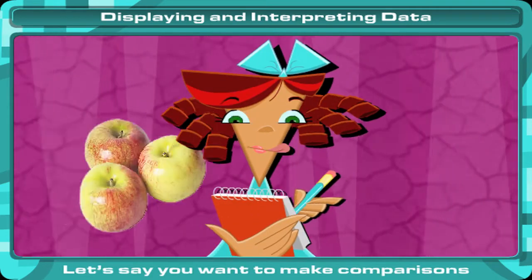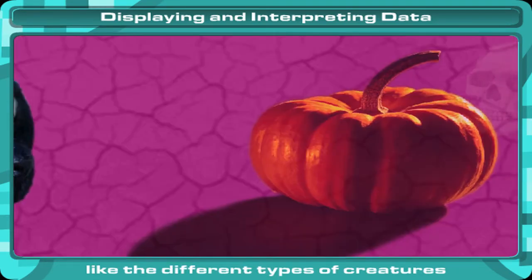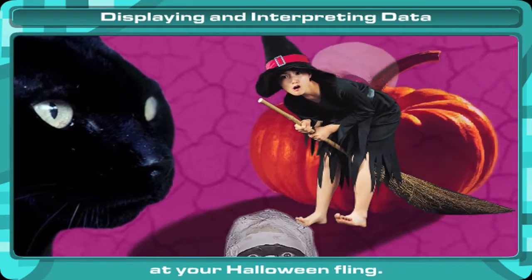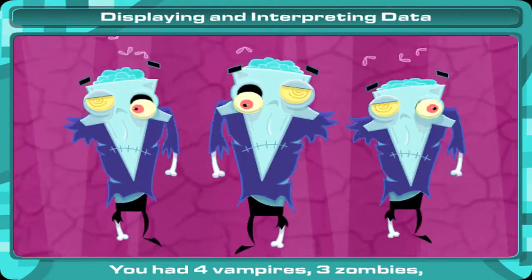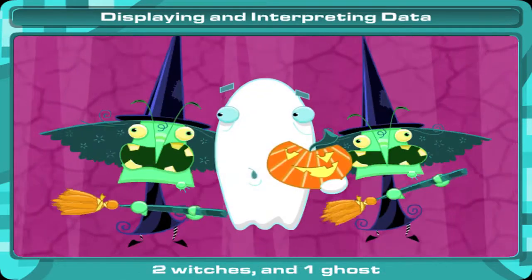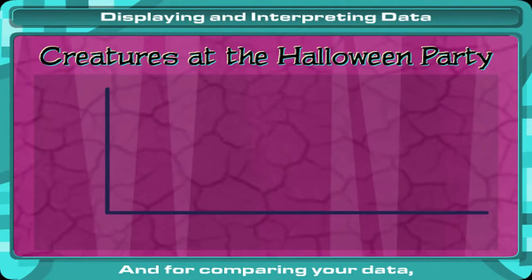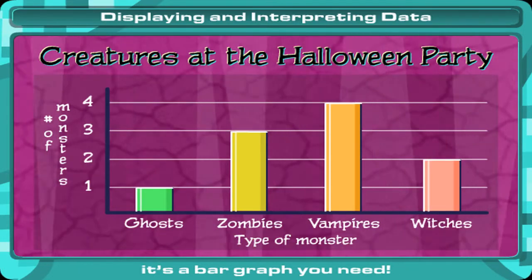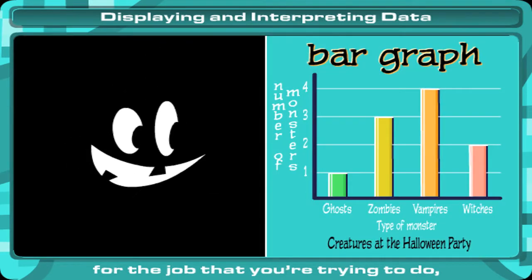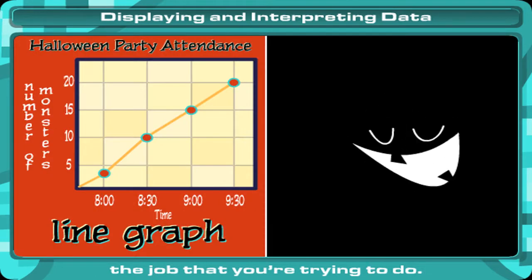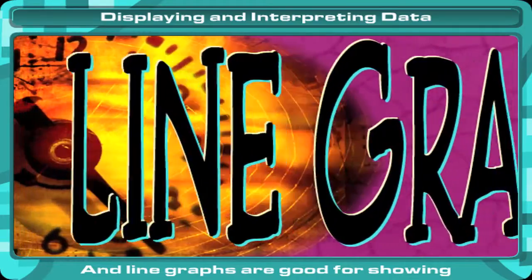Let's say you want to make comparisons of different things, like the different types of creatures at your Halloween fling. You had four vampires, three zombies, two witches and one ghost, who tried to hunt the karaoke machine. And for comparing your data, it's a bar graph you need. The right graph is the right tool for the job that you're trying to do.